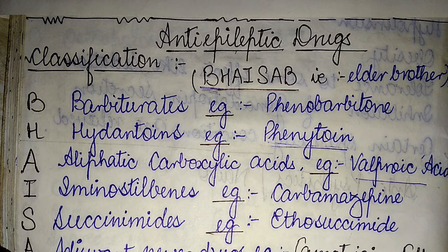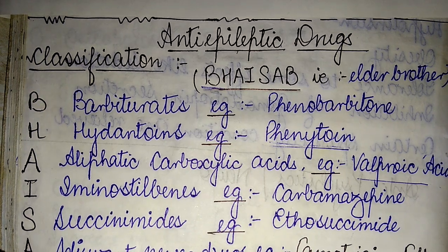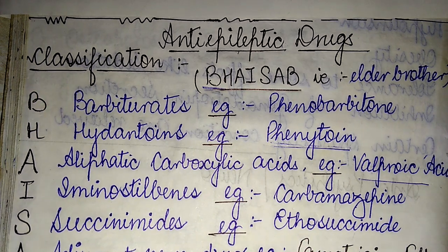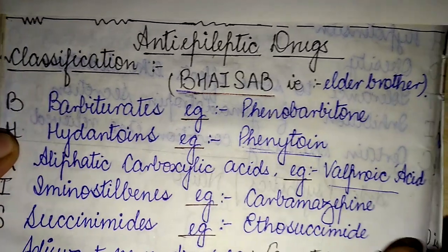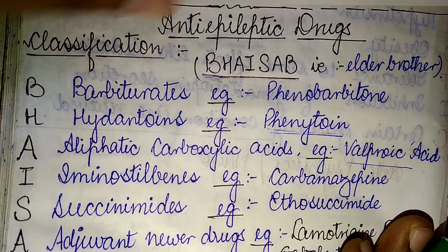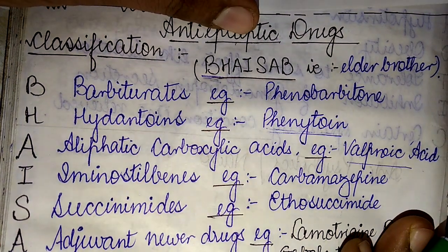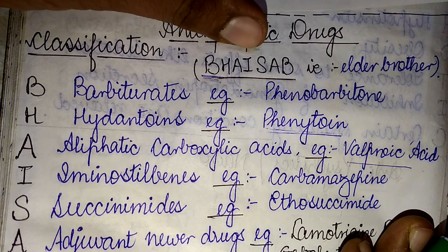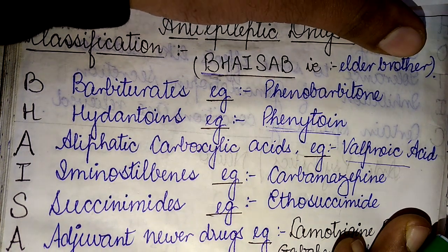The classification of the anti-epileptic drugs can be better remembered if we use the mnemonic BHAISA. The mnemonic I have made is BHAISA, which in Hindi actually refers to an elder brother.